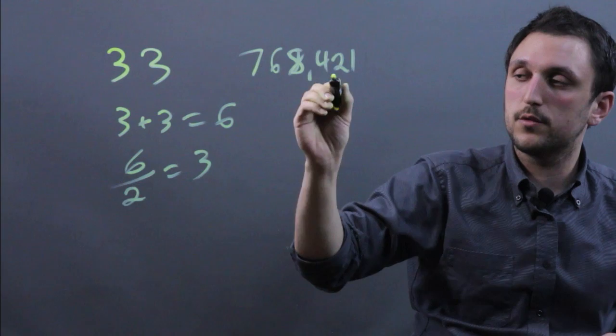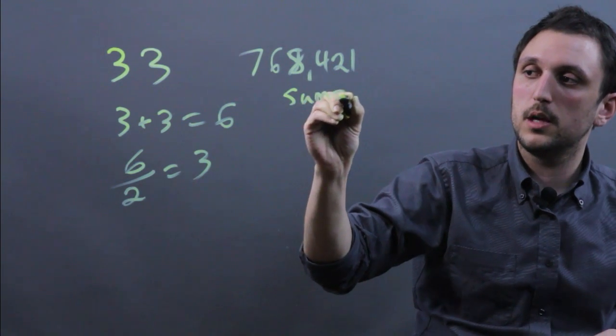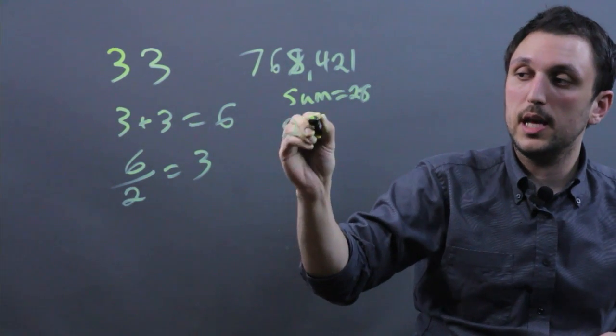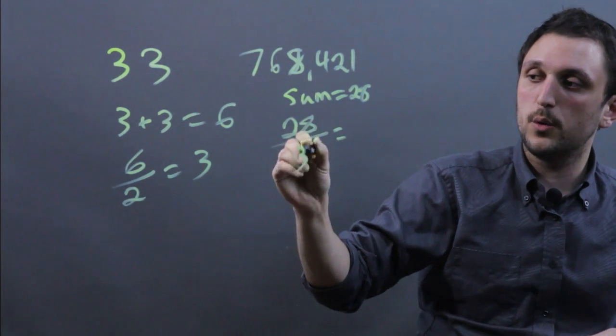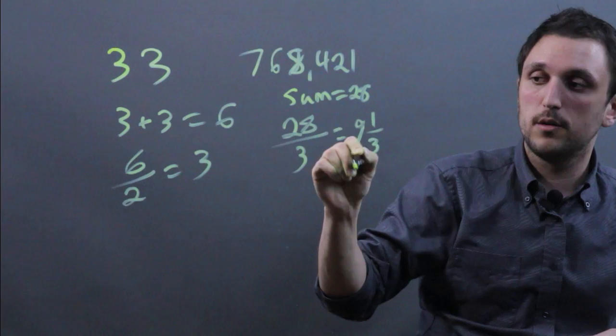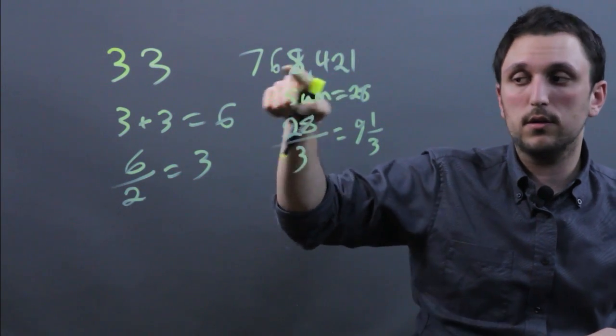So the sum here equals 28, and 28 over 3 is going to be 9 and 1 third. So it's not divisible by 3. So this is not.